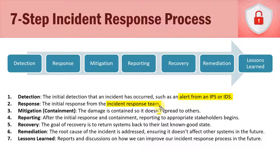Then we move on to step three, which is mitigation — though it's really containment. Step three is containment, where the damage is contained so it doesn't spread to others. For example, let's say we have the sales department and an email has spread through that department. Everybody opened it and it includes a virus, so every single system in that department is now infected. We want to contain that virus so it doesn't spread to systems in other departments within our organization.